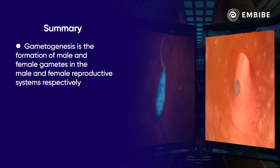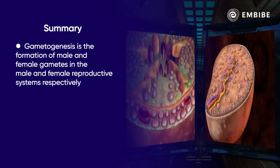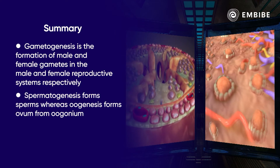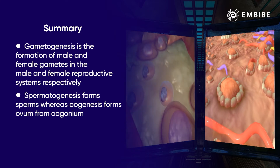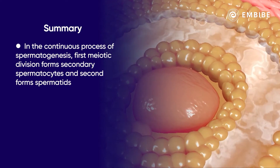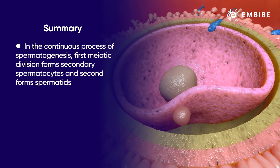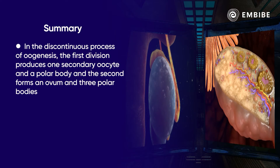Gametogenesis is the formation of male and female gametes within the male and female reproductive systems respectively. Inside the testes, spermatogenesis forms sperms from spermatocytes, whereas inside the ovaries, oogenesis forms ovum from oogonium. In the continuous process of spermatogenesis, each meiotic division is equal — first forming secondary spermatocytes and second forming spermatids. However, oogenesis is a discontinuous process where each meiotic division is unequal; the first division produces one secondary oocyte and a polar body, and the second division forms an ovum and three polar bodies.